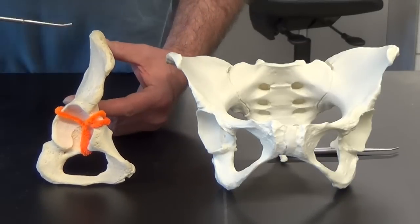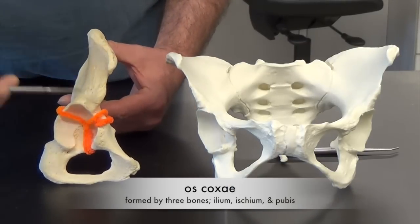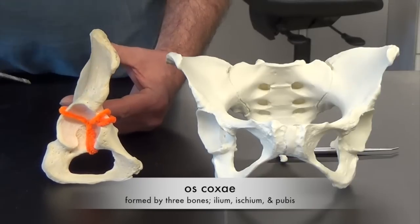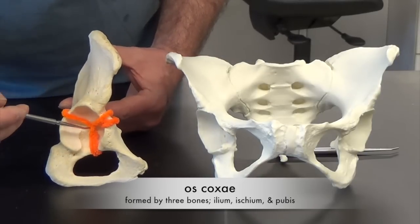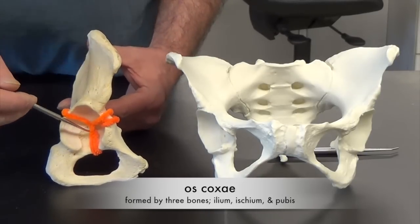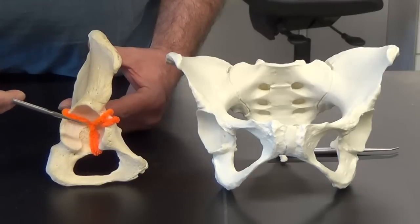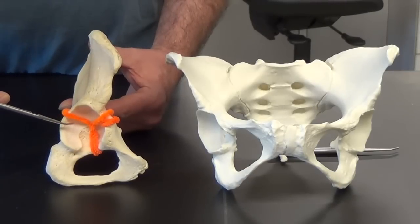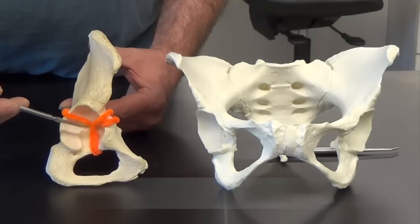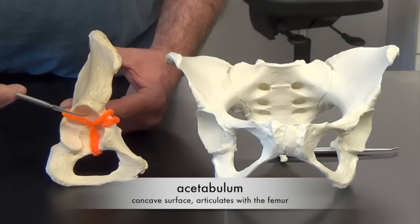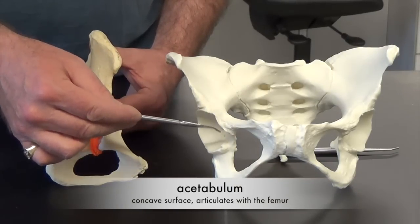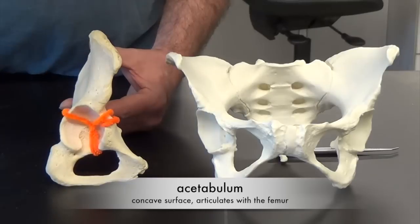The os coxae consists of three bones that are fused together, and they all meet in the middle of this deep depression, which is where the femur articulates. It is called the acetabulum, and we can see the acetabulum on our pelvis here.